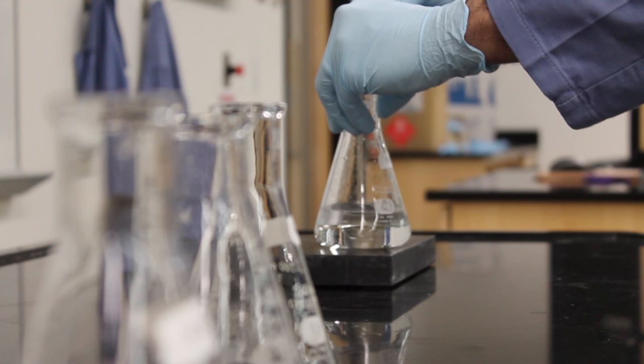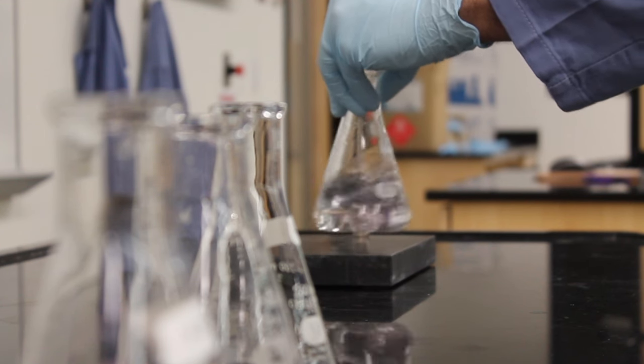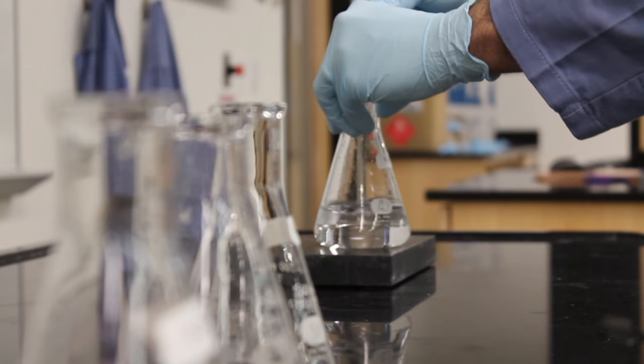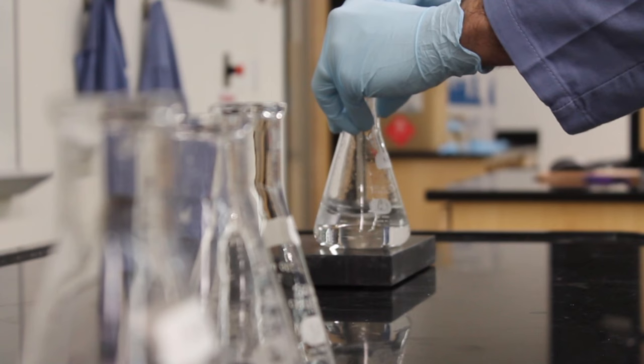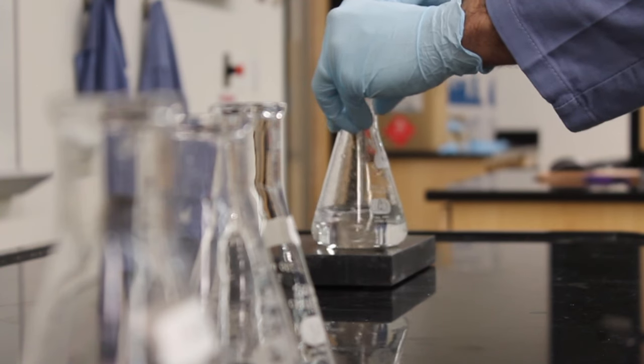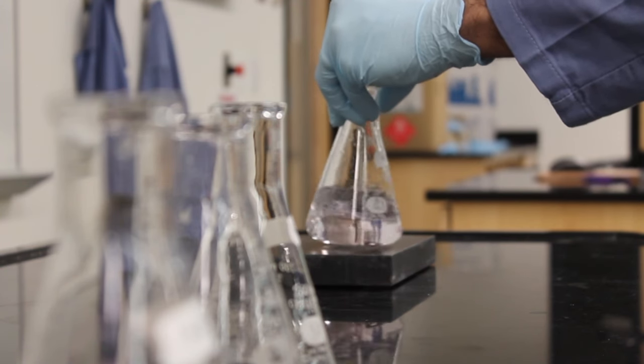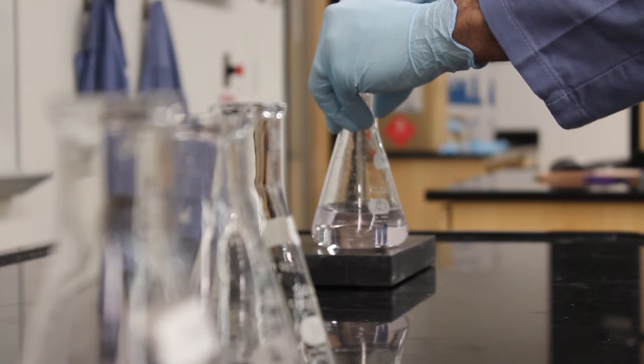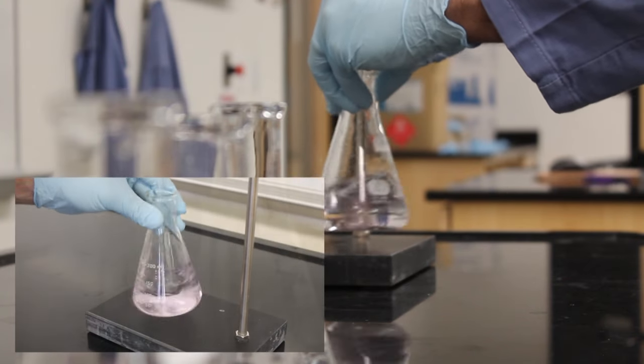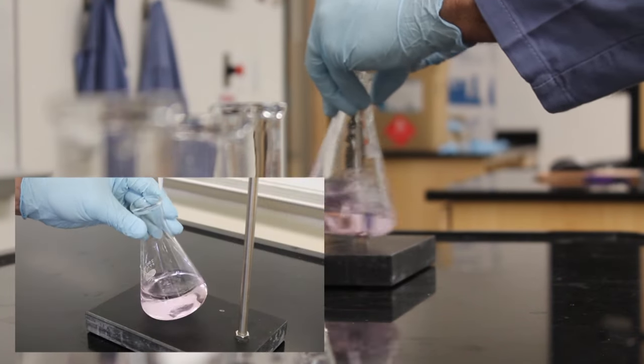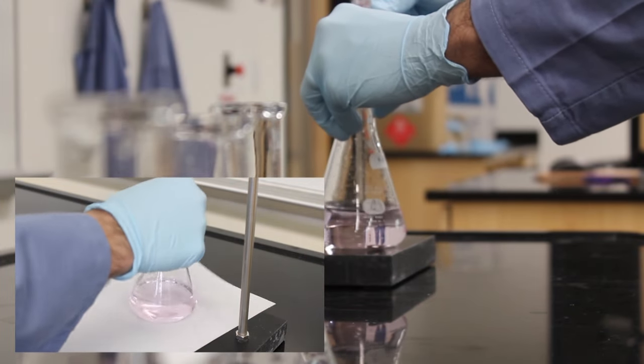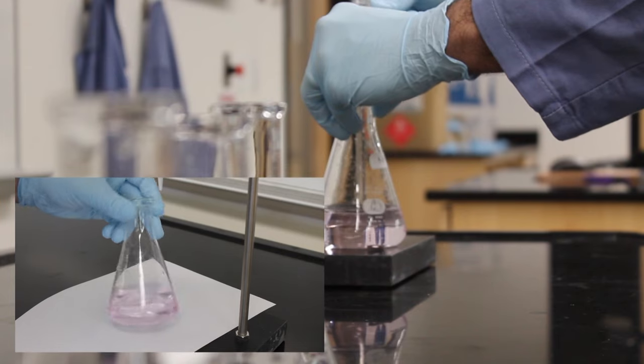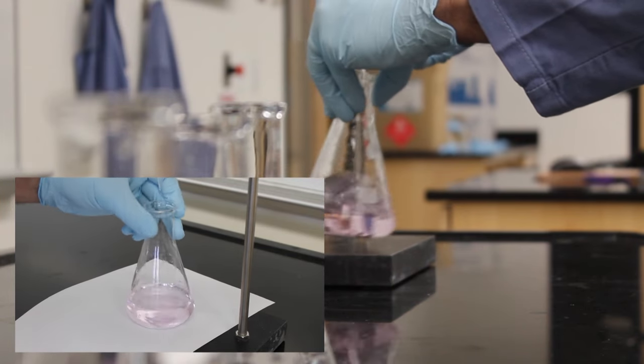This process can take a while, but in order not to go past your equivalence point you need to take your time. Adding your titrant drop wise and stirring intermittently will ensure the best results. Adding a sheet of white paper under the flask can help you see the color change if the black background of the ring stand makes it difficult for you to see. A pale pink is the color that you are aiming for.